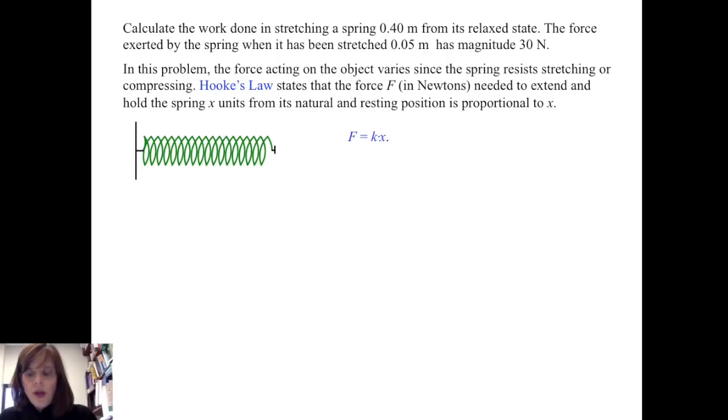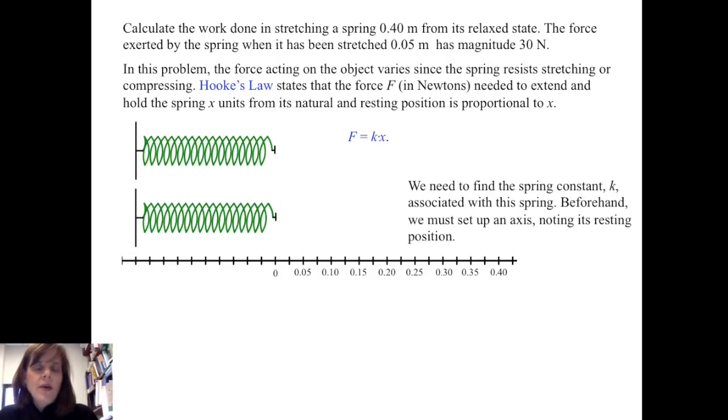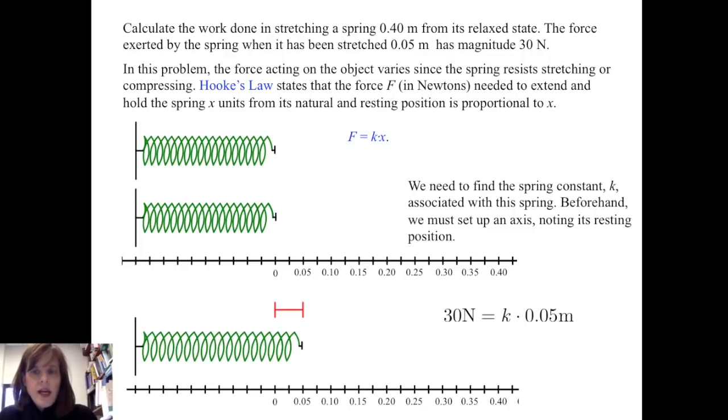So here we have a spring. The first thing that we do is we set up a measuring system where its resting position is at zero. And we must find the spring constant k associated with the spring.